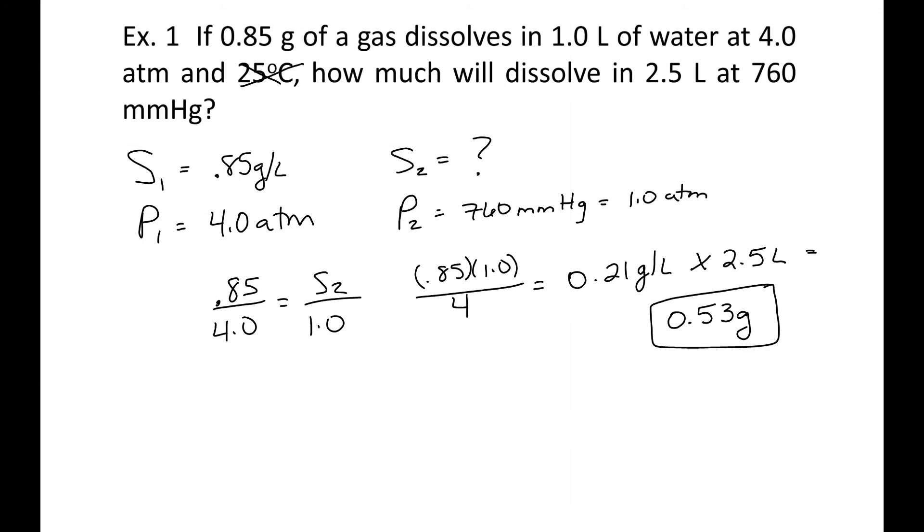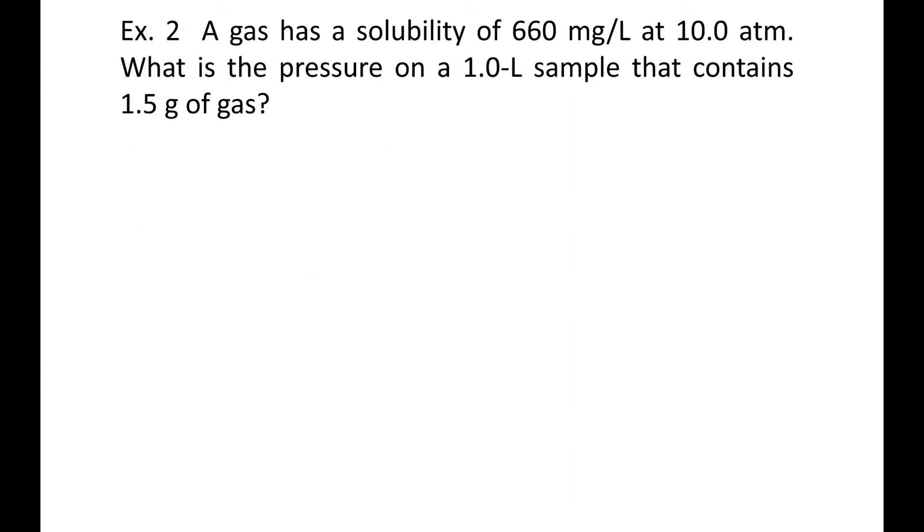Seems a little complicated. I'd have to do a little conversions, but I think you'll handle it. Okay, a gas has a solubility of 660 milligrams per liter at 10 atmospheres. What is the pressure on a 1 liter sample that contains 1.5 grams of gas? So once again, we're going to have to do some converting. S1, we know that solubility has to be in grams per liter, not milligrams. So we're going to go ahead, move the decimal point three places to the left, and it becomes 0.66 grams per liter is your solubility, with your first pressure being 10 atmospheres.